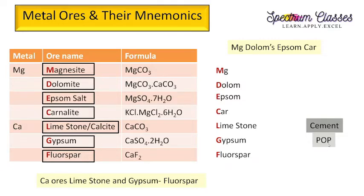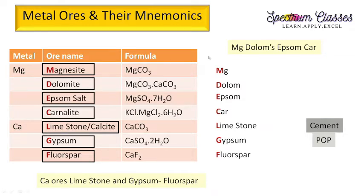Fluorspar is calcium fluoride. Note that for calcium we have fluorspar, and in the next slide for aluminium we have feldspar — these two have almost the same name so be careful. Alkaline earth metals are thus present as carbonates, sulfates, and fluorides. To summarize: magnesite, dolomite, Epsom salt, carnallite — then limestone, gypsum, fluorspar.